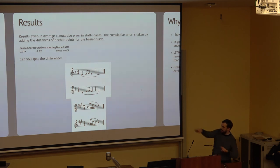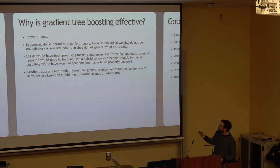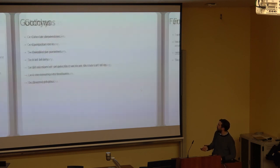This is mean distance averaged over the Bezier control points. Dense and LSTM did terrible. Why is gradient tree boosting effective? I have no idea. In general, dense perform poorly because individual weights do too much work. Gradient boosting and random forest are generally more suited to phenomena where there's disparate strands of information.